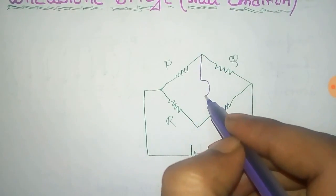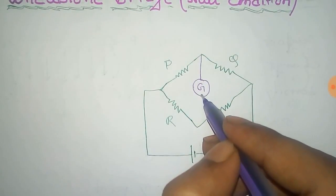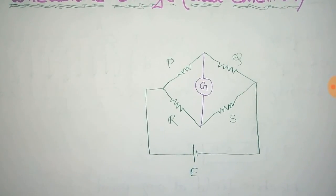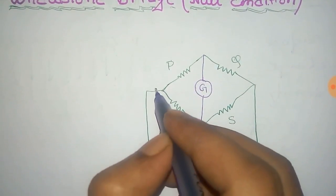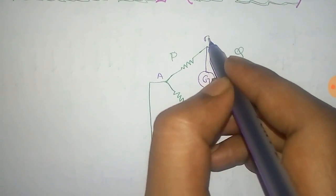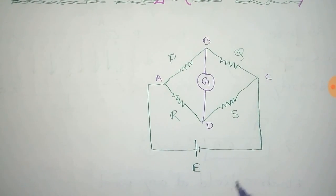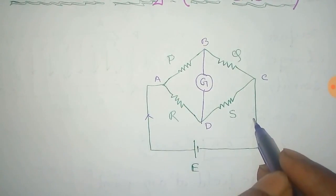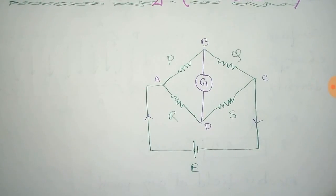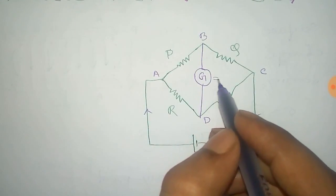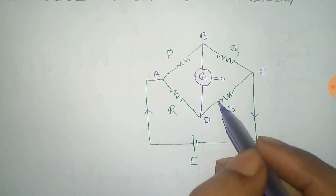Now we connect a galvanometer between these points to check the null point. That is point A, point B, point C, and point D. And this is the direction of the current. At the null condition there will be no current through the galvanometer, so it will show zero.